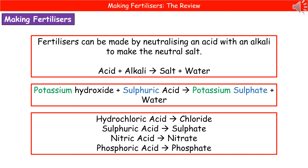Welcome to our review on making fertilizers. One thing you need to be able to do is explain how to carry out an experiment in the school lab to make a fertilizer. The key principle is that we are going to make a fertilizer by neutralizing an acid with an alkali to make the neutral salt, which is our fertilizer.